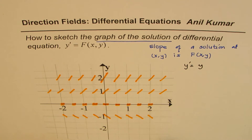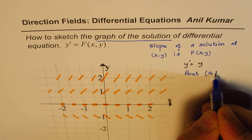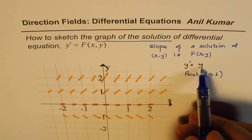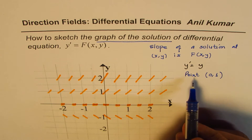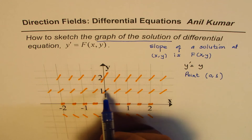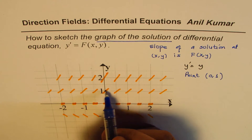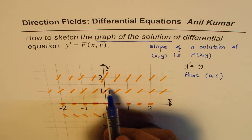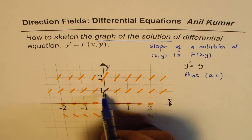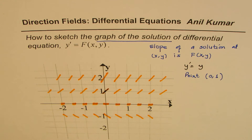If y = -1, the slope would be -1, so the lines tilt in the negative direction. By filling in each and every coordinate point we indicate the direction in which the solution curve moves. Now if we also know a specific point the curve passes through — for example, the point (0,1) — then we know the starting point. Knowing the direction to move from that point, we can sketch the graph.